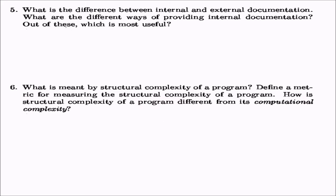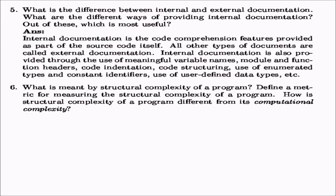What is the difference between internal and external documentation? Internal documentation consists of code comprehension features provided as part of the source code itself, like comments. All other documents are external. Internal documentation includes meaningful variable names, function headers, code indentation, code structuring, use of enumerated types, constant identifiers, and user-defined data types.